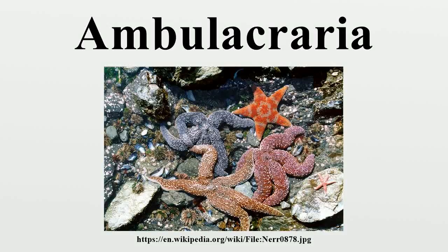Ambulacraria, or Coelomophora, is a clade of invertebrate phyla which includes echinoderms and hemichordates. A member of this group is called an Ambulacrarian. The Ambulacraria are part of the deuterostomes, a larger clade that also includes the Chordata and Vetulicolia.